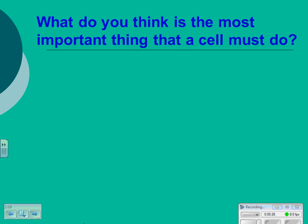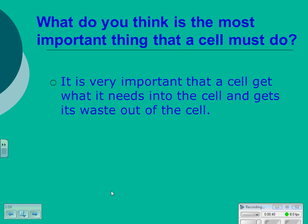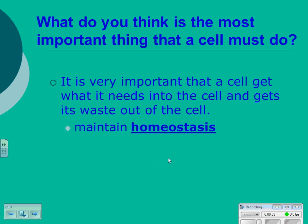What do you think is the most important thing that a cell must do in order to stay alive? Think about what you need to do in order to stay alive. Some of you might say eat. So it's important that the cell gets what it needs for nourishment and nutrients, and that it's able to get its waste out so that toxins don't build up. This process of balancing is known as homeostasis.